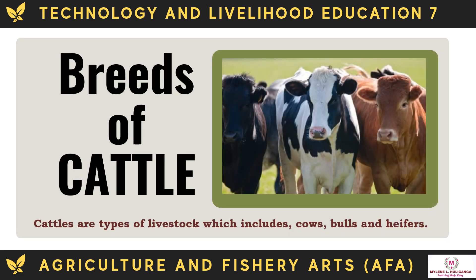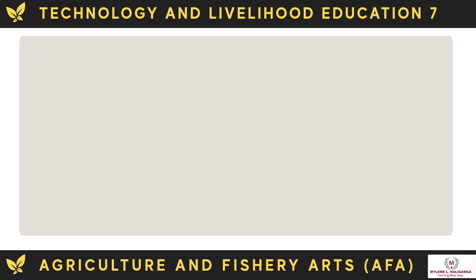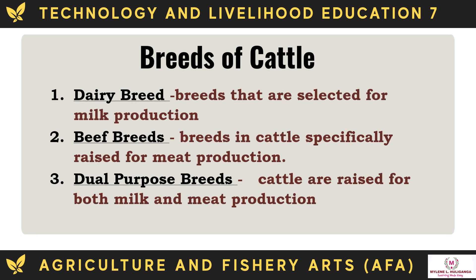Breeds of Cattle: cattle are types of livestock which include cows, bulls, and heifers. The breeds of cattle are divided into three categories: the dairy breed, the beef breeds, and the dual breeds. Dairy breeds are selected for milk production; beef breeds are cattle specifically raised for meat production; and dual-purpose breeds are cattle raised for both milk and meat production.